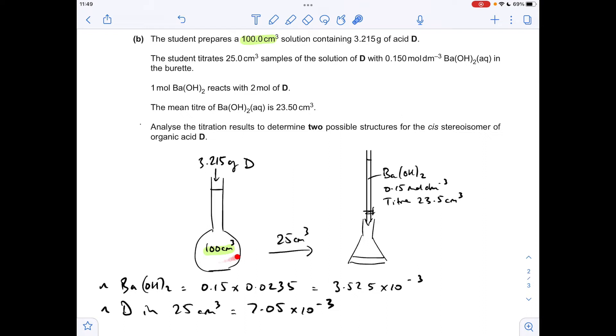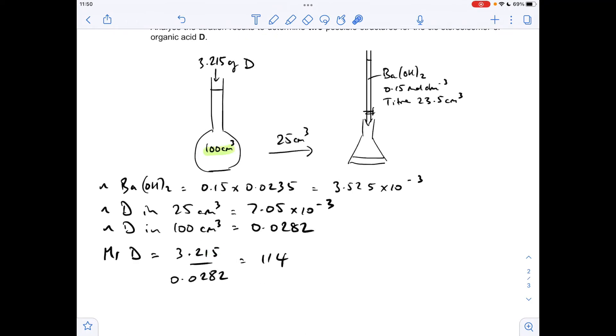The moles of D in the 100 cm³ flask is going to be 4 times that because obviously 25 is a quarter of 100, which means that there's 0.0282 moles of D in the solution. We know how many grams were involved. We know the moles. We can work out the MR of D from that. So the MR of D comes out at 114.